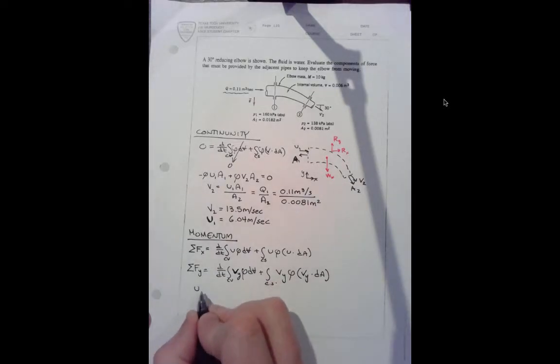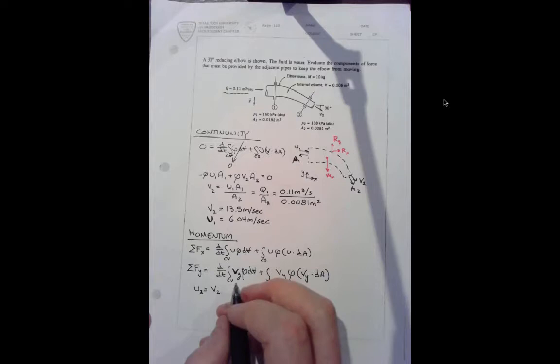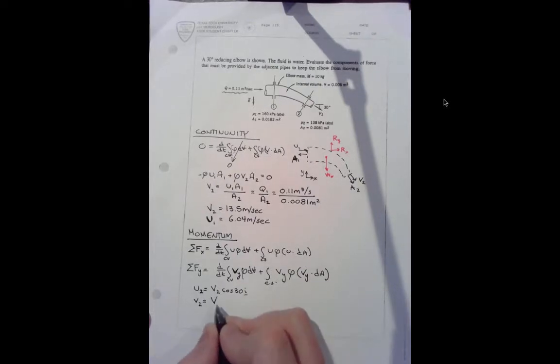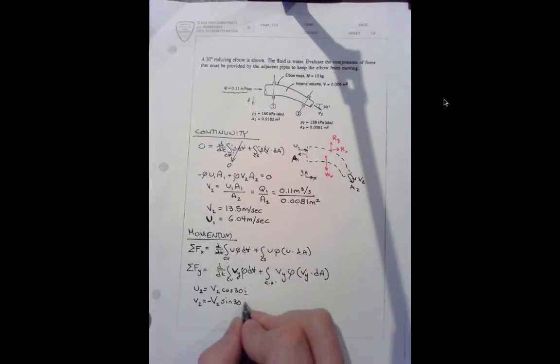So here's what we know is that u, the x component at position 2, is velocity 2 magnitude times the cosine of 30 in the x direction. And v2 component is magnitude v2 sine of 30. It's moving down and it's in the y direction.